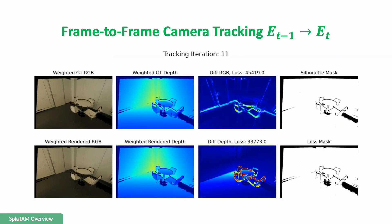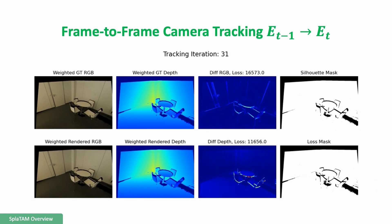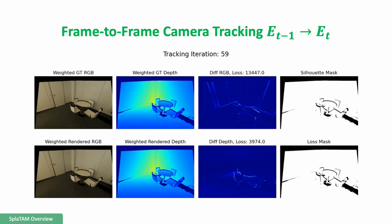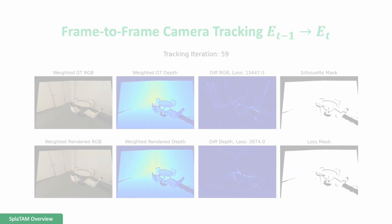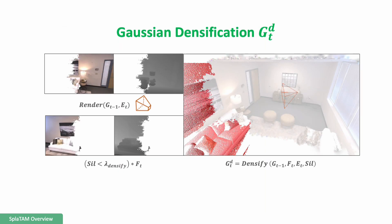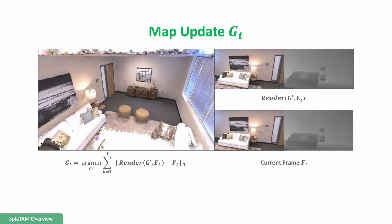This is an example visualization of the camera tracking, where you can see that the silhouette-guided rendering losses lead the optimization to the correct pose. Then, once we estimate the new camera pose, we render a visibility silhouette. This visibility silhouette elegantly tells us where to add new Gaussians to the map. Finally, once we add new Gaussians, we select keyframes with overlapping views and optimize the current map.